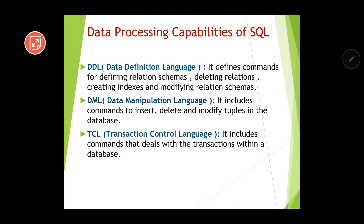Next we have TCL, or Transaction Control Language. It includes commands that deal with transactions within a database. For example, if you are doing a payment through a gateway while buying a product online and the internet connection goes off mid-transaction with money already deducted, TCL ensures that either the transaction happens entirely or it will not happen at all. Therefore, your money will come back to the bank account — this is handled by transaction control language.